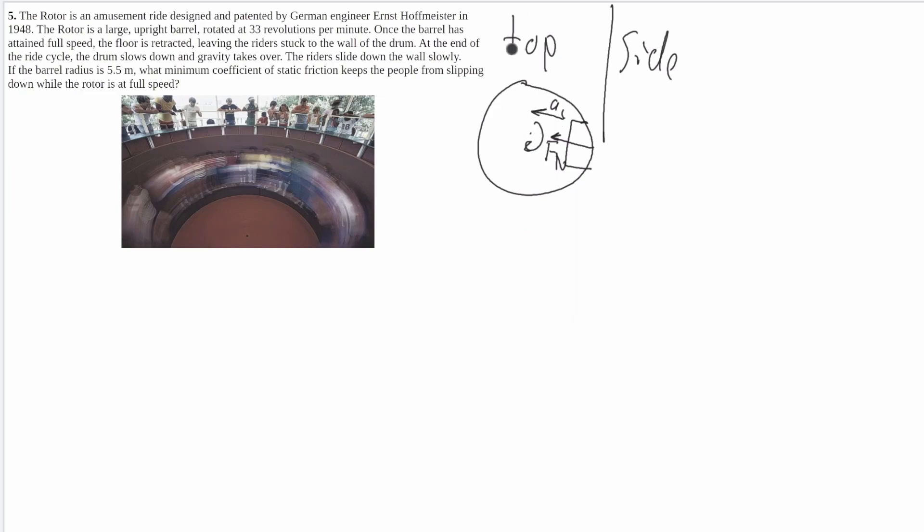And that's pretty much it for the top except that this is going to just have the radius and it tells us the radius is 5.5 meters. In the side view it'll just be a wall with the person on there and we're going to draw a dotted line showing that this is the center of the circle. This is going to have the same radius.